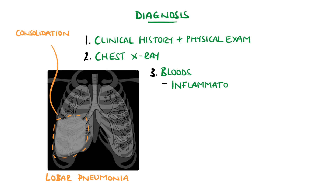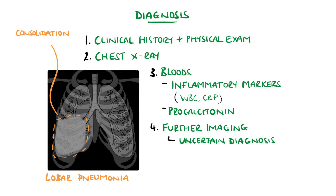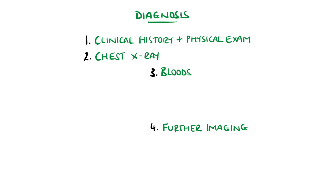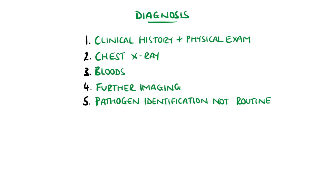Blood tests can help confirm the presence of an inflammatory process, such as leukocytosis, and CRP and procalcitonin may be used to help distinguish a bacterial from a viral cause. CT imaging can be done in some cases, especially if the diagnosis is uncertain or if treatment is not working, looking to exclude fungal pneumonia, an abscess, or a pulmonary embolism.